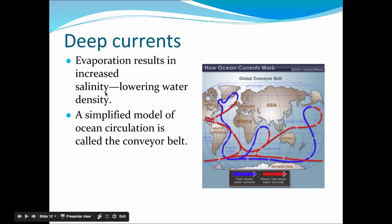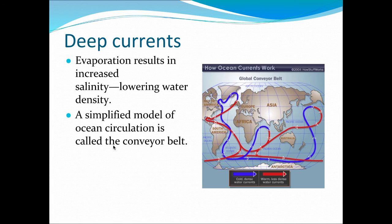Evaporation results in increased salinity. As water sinks, it pulls other water into the space left behind. This cold water circulates in the depths and will rise as it reaches the equator and warms up. You can think of it as a conveyor belt — that's its simplified name. It travels in this big cycle, and it takes a few thousand years for one drop of water to cycle through all of it, but it carries all that energy with it.